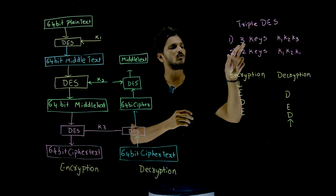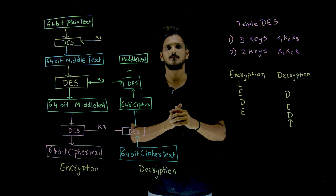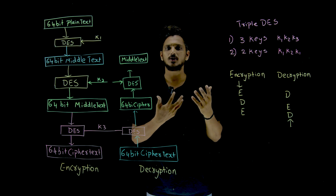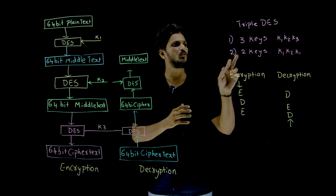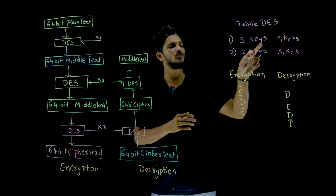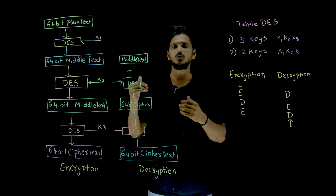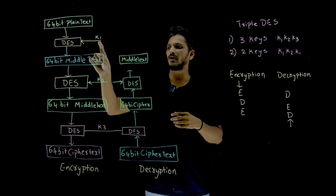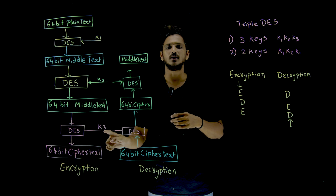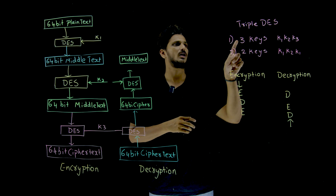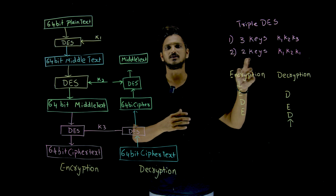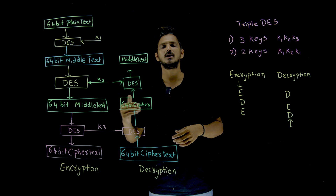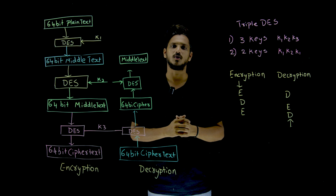Some implementations use two keys instead of three. Why use three keys? Most commonly three keys are used, but in the two-key variant, K1 is used in the first layer, K2 in the second layer, and K1 again in the third layer — so K1, K2, K1. That is what Triple DES with two keys means. The same EDE concept — Encrypt, Decrypt, Encrypt — is still followed.